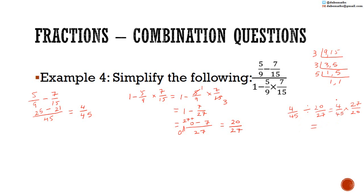Cancelling: 4 can go into 20 — 4 into 4 is 1, 4 into 20 is 5. 3 goes into both 45 and 27 — 3 into 27 is 9, 3 into 45 is 15. Then 9 and 15 can be reduced further: 3 into 9 is 3, 3 into 15 is 5. 3 and 5 cannot be reduced further. So 1 multiplied by 3 is 3, and 5 multiplied by 5 is 25. The answer is 3 over 25.